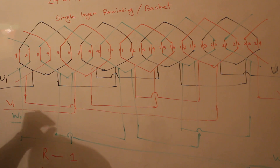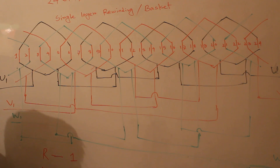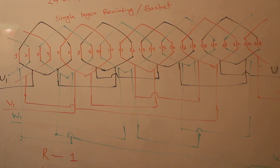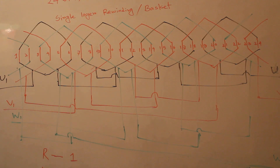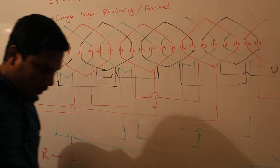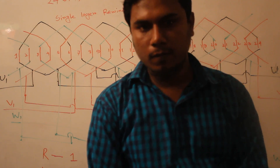This four-pole motor has a speed of 1500 RPM.